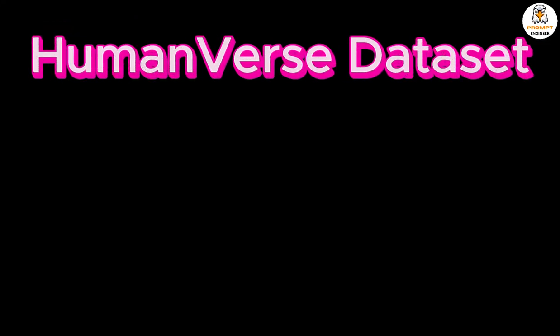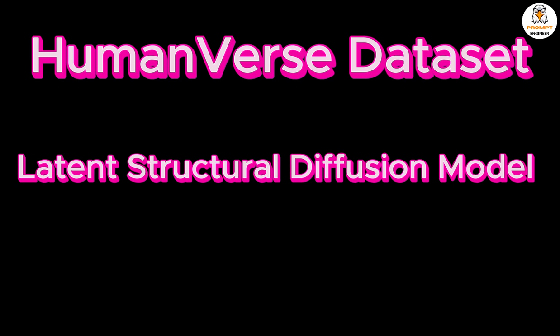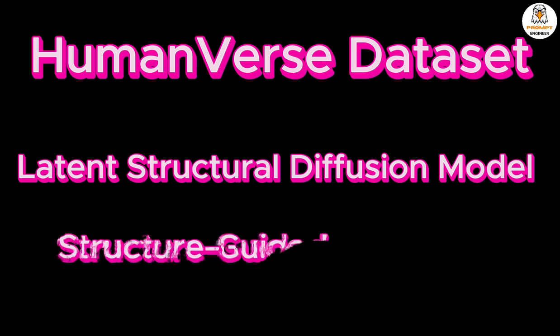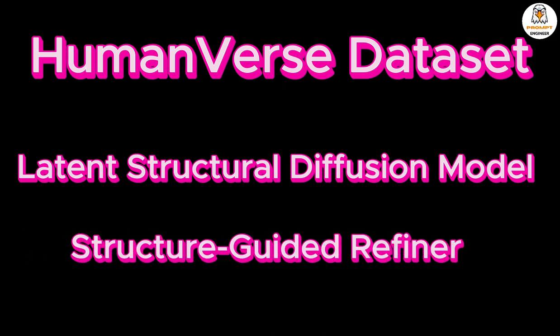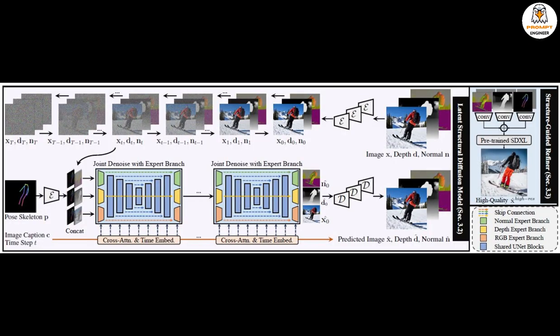More simply, if we look at the overview of the HyperHuman Framework, the researchers have proposed three things. First, a large-scale human-centric dataset called HumanVerse, consisting of 340 million in-the-wild human images of high quality and diversity, curated with comprehensive annotations like human pose, depth and surface normal. Second, a latent structural diffusion model used to jointly capture image appearance, spatial relationship and geometry in a unified framework. Third, a structure-guided refiner, further devised to compose the predicted conditions for generation of better visual quality and higher resolution.